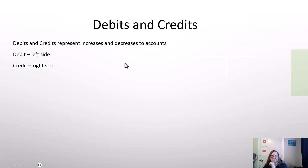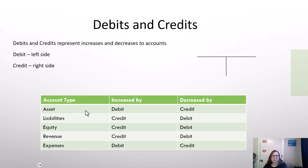In accounting, debits and credits represent increases and decreases to accounts. We have something called a T account, which is basically just a ledger for each account. The debit side is the left side, and the credit side is the right side. Whether it's an increase or decrease on the debit or credit side depends on the type of account. When you add or increase an asset in your business, that goes on the debit side. When you sell or dispose of the asset, you would do a credit to that asset account.